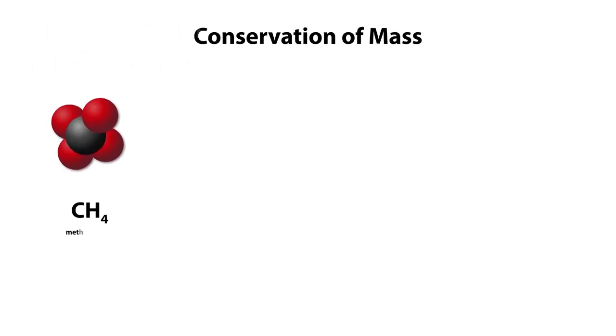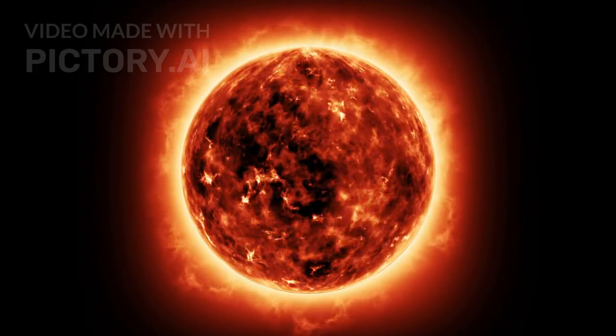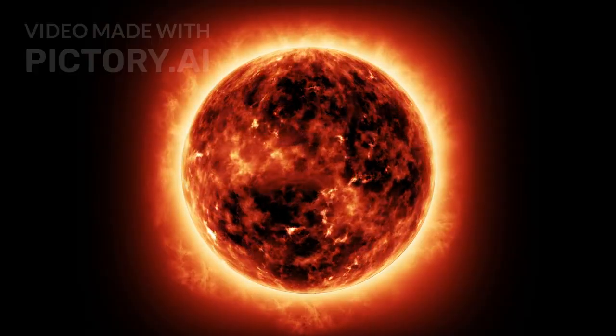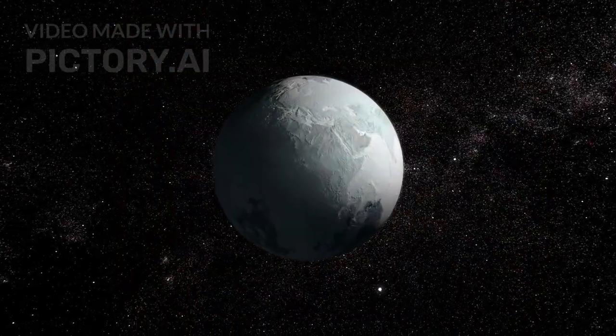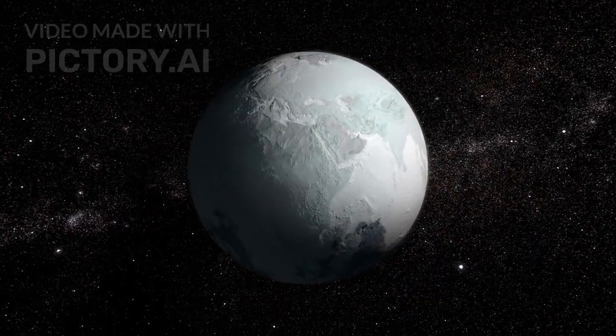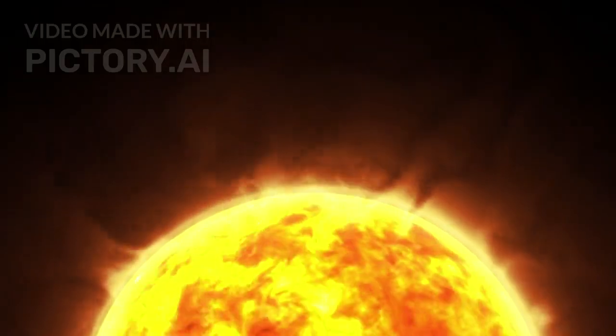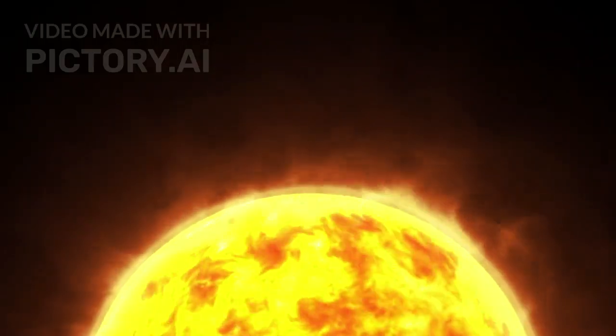Pluto's atmosphere is equally remarkable. Though fragile and thin, it's made of nitrogen, methane, and carbon dioxide. What makes it unique is how it behaves. As Pluto moves closer to the sun in its long orbit, the atmosphere thickens. As it drifts farther away, the atmosphere collapses and freezes back onto the surface. This strange cycle of atmosphere breathing in and out is unlike anything else in the solar system.